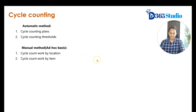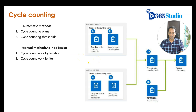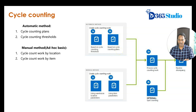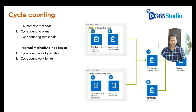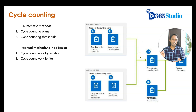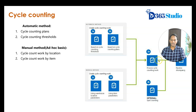Let me quickly take you through the Microsoft process diagram — a simple diagram to help you understand this further. These are the two automatic methods and these are the manual methods we talked about. Using either automatic or manual methods, a cycle counting work gets created, which is the basis for the warehouse worker to go and perform the counting. The warehouse worker then processes the cycle counting work on the mobile device.